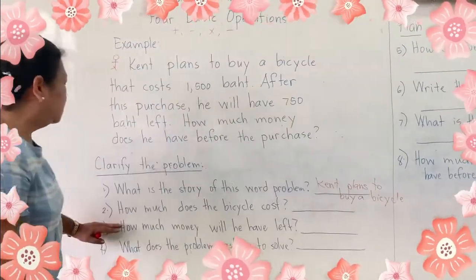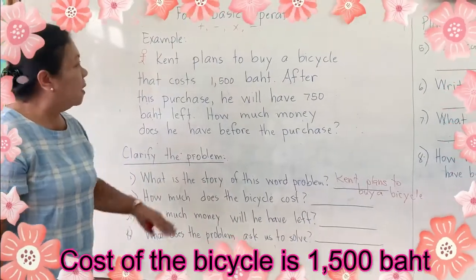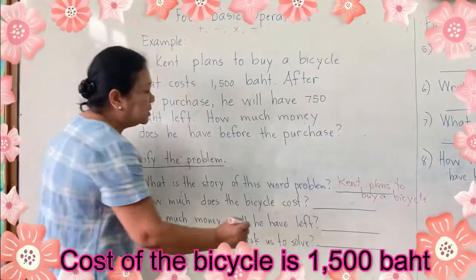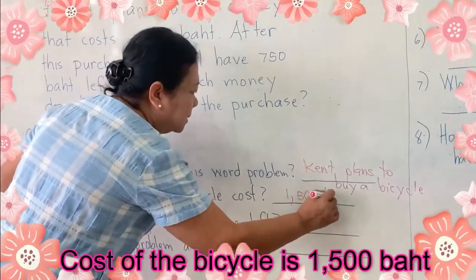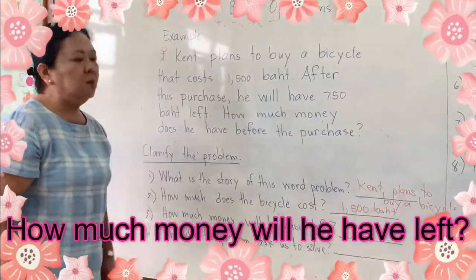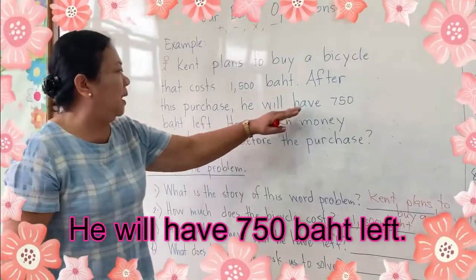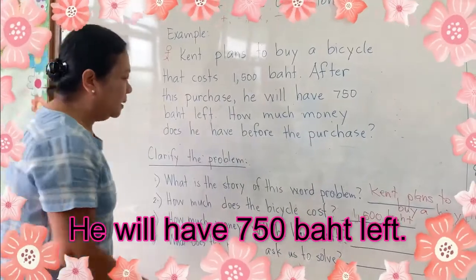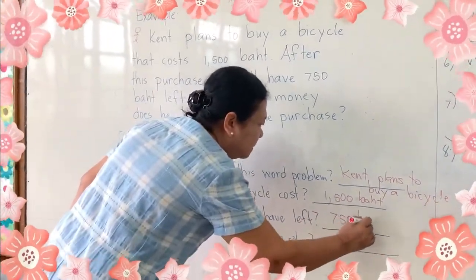Next, number two: how much does the bicycle cost? The bicycle costs 1,500 baht. Then, how much money will he have left? It says he will have 750 baht left, so we write here 750 baht.